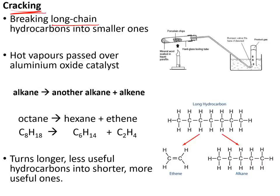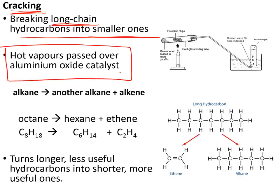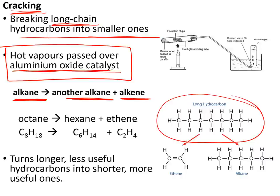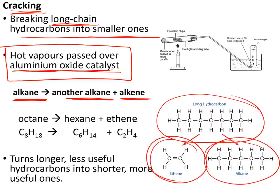Cracking is used to break long-chain hydrocarbons into smaller, more useful ones. You heat the hydrocarbon and pass the hot vapours over an aluminium oxide catalyst, breaking an alkane down into a shorter alkane and an alkene. For example, one long octane molecule can become a short ethene molecule and a hexane molecule. The total number of carbon and hydrogen atoms remains the same throughout.